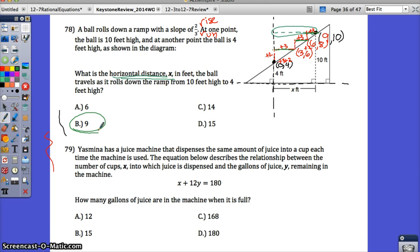And let's finish up this video with number 79. Jasmina has a juice machine that dispenses the same amount of juice into a cup each time the machine is used. The equation below describes the relationship between the number of cups, x, so x is the number of cups dispensed, into which juice is dispensed, and the gallons of juice y remaining in the machine. So y is gallons of juice left. Just by writing that in, that might help you. So how many gallons of juice are in the machine when it is full? Well, if it is a full machine, then think about it. How many cups of juice have been dispensed? If it's full, 0 is what x is.